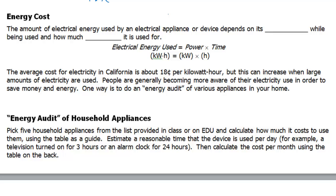Okay, scholars, let's take a look at the bottom part of the Electric Power Handout. Energy cost: the amount of electrical energy used by an electrical appliance or device depends on its power while being used and how much time it is used for.